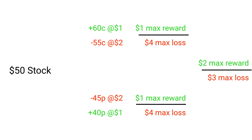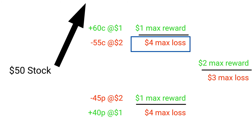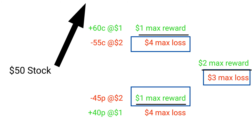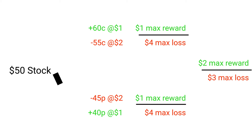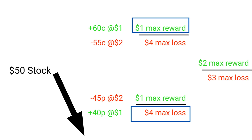The answer is $3. This is because mathematically, we can't lose both sides on an iron condor — a stock can't be in two places at once. If the stock goes up past our bear call spread, we could lose $4 on that trade, but we would still profit $1 on the bull put spread, leaving us with a net loss of $3. By that same logic, if the stock crashed and we lost $4 on the bull put spread, we would still profit $1 on the bear call, netting us a loss of $3.